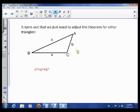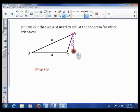So it turns out that all we have to do is adjust that theorem. If you look here, I've got a triangle, but any triangle is actually quite close to a right-angled triangle.